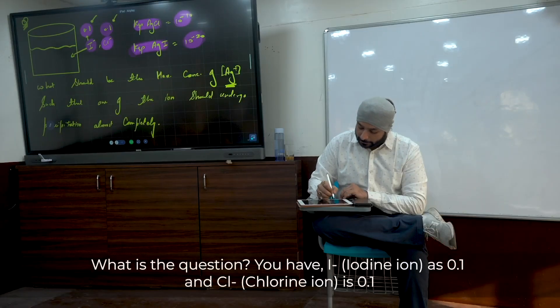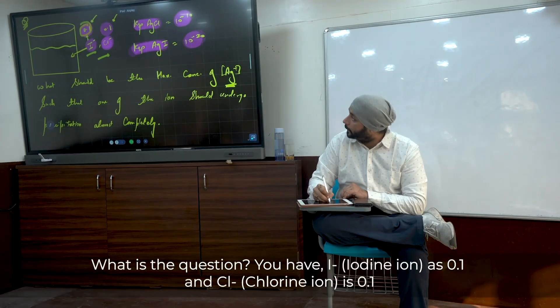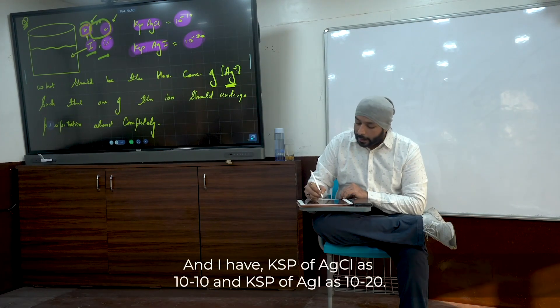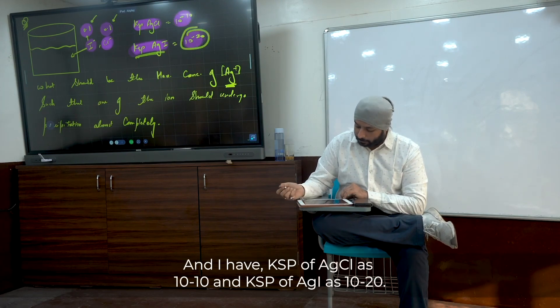Question: Can I pass a solution with 0.1M I⁻ and 0.1M Cl⁻? Ksp of AgCl is 10⁻¹⁰, and Ksp of AgI is 10⁻²⁰.